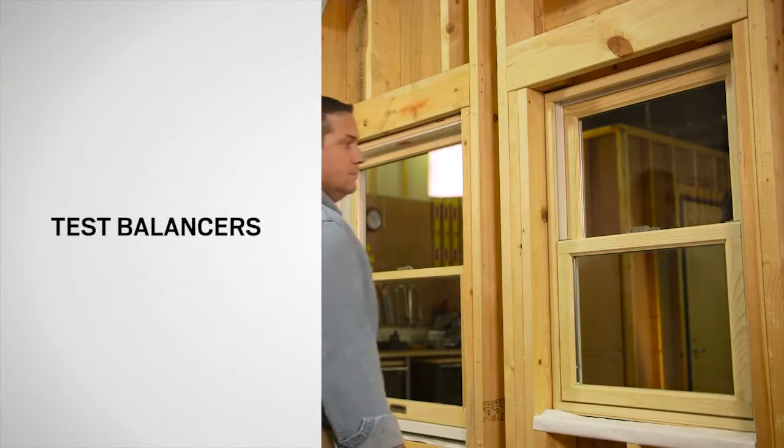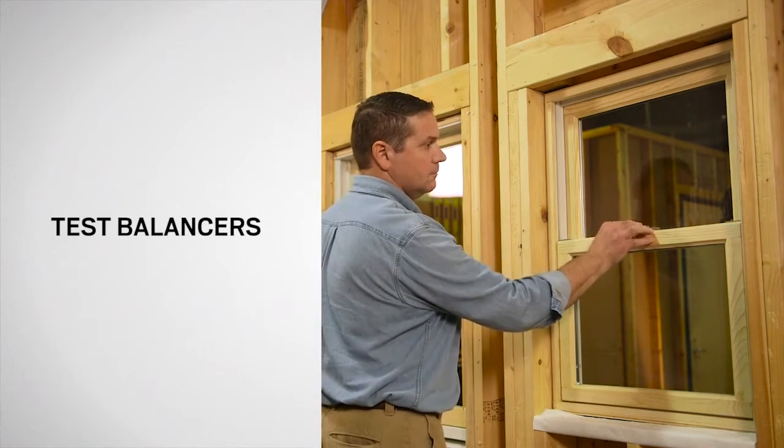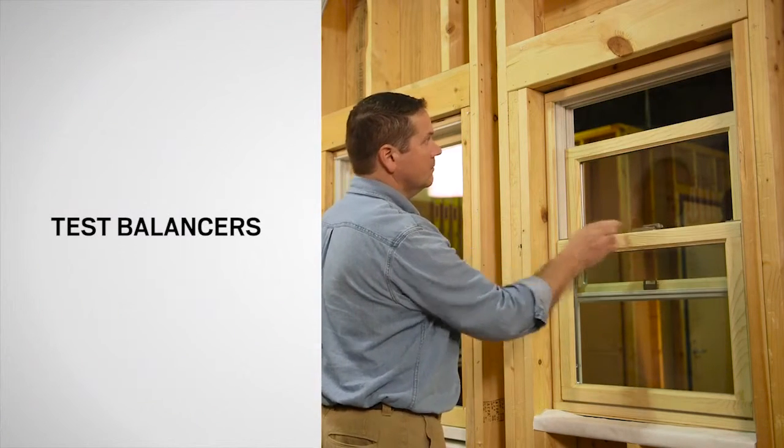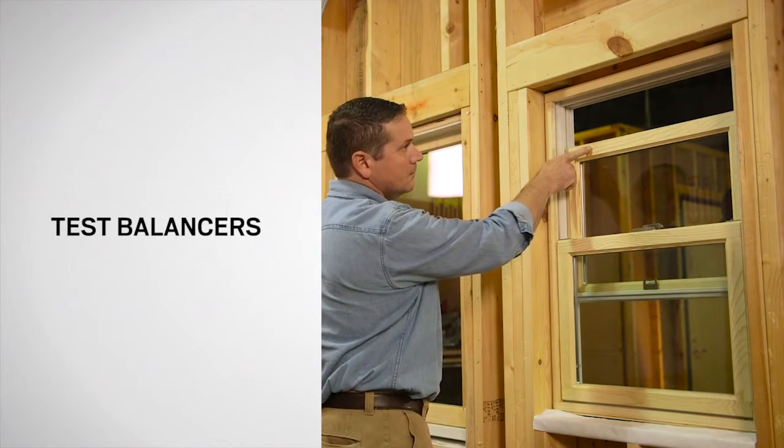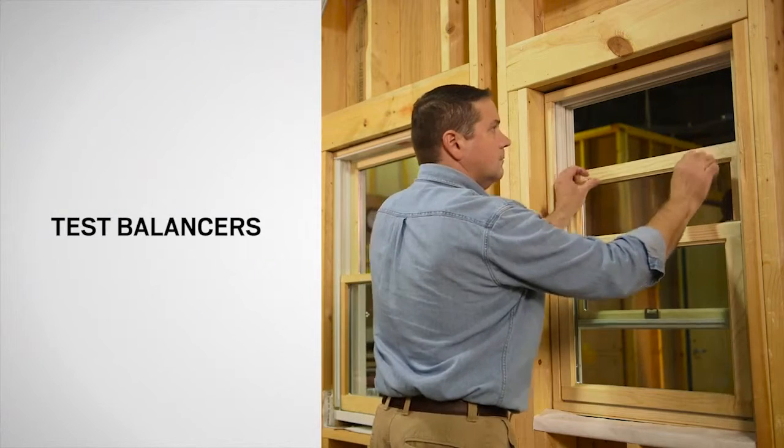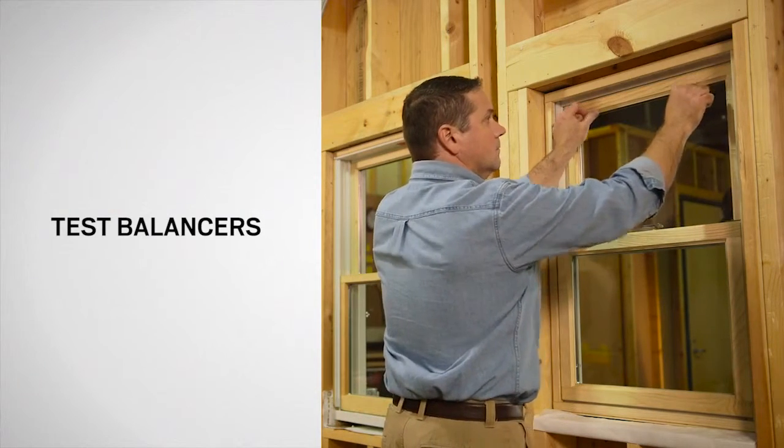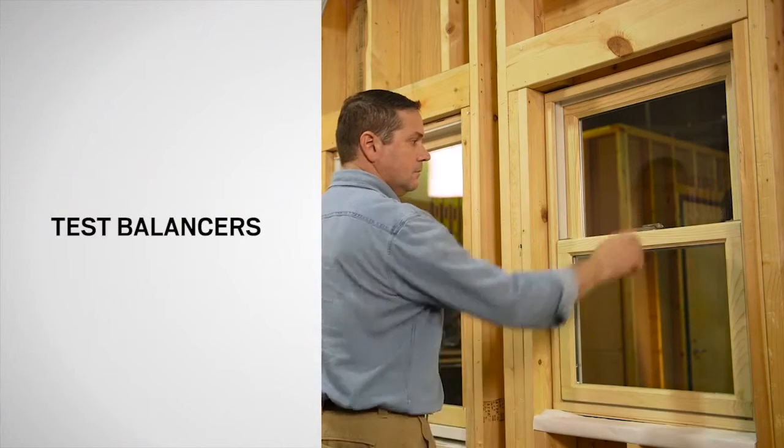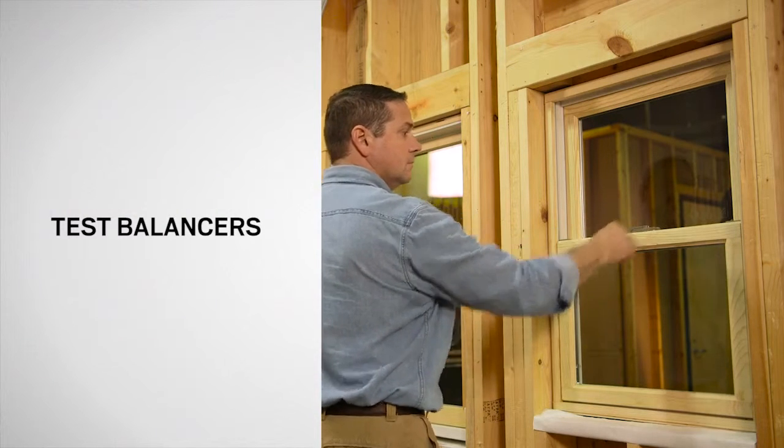Position your window's sash at different heights to check for sash drift or the sash sliding downward. If the sash does drift, push the sash down approximately 3 inches to re-engage the balancers. If this doesn't resolve the problem, the balancers may need to be replaced.